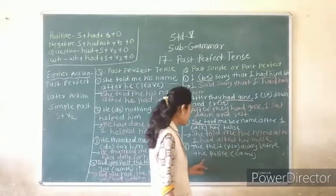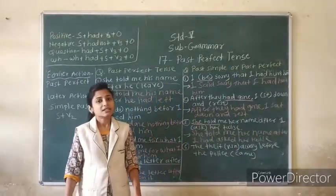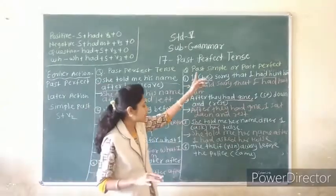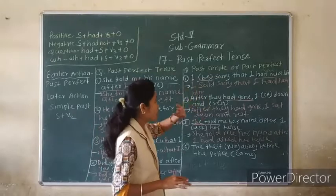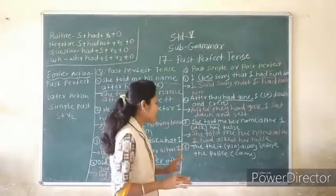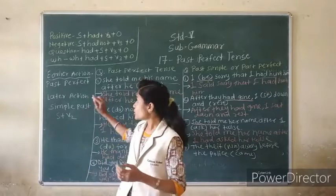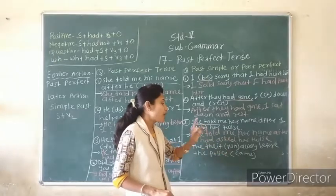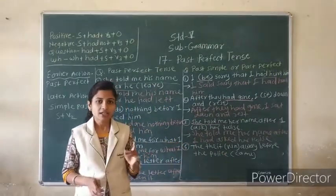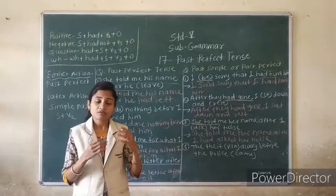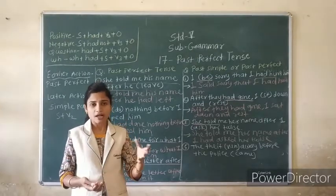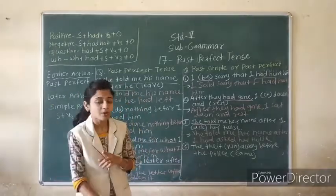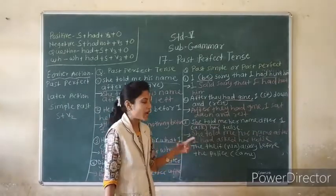Fourth: 'The thief ran away before the police came.' Neither past simple nor past perfect is given — both you need to use. The thief ran away — that is the first/earlier action. So use Past Perfect for that.